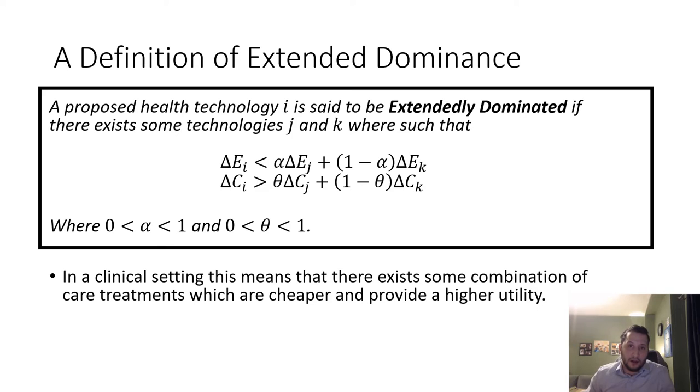A proposed health technology I is said to be extendedly dominated if there exist technologies J and K such that the effectiveness from technology I is less than some combination of care options J and K and the costs of J and K.